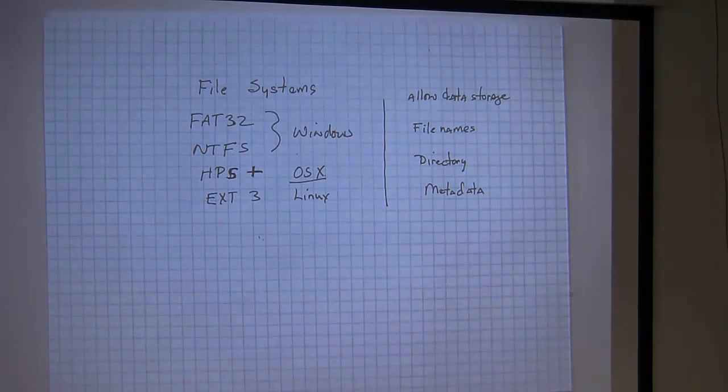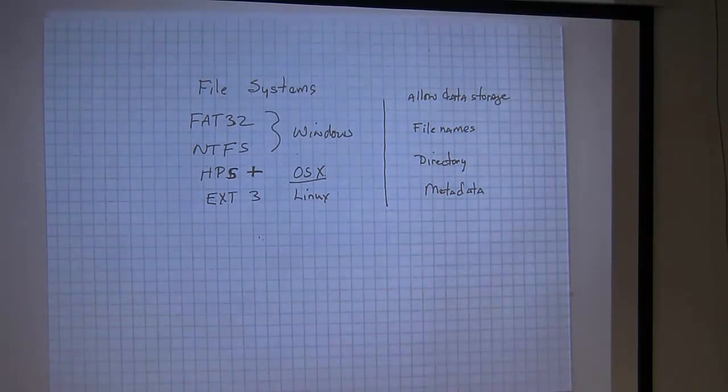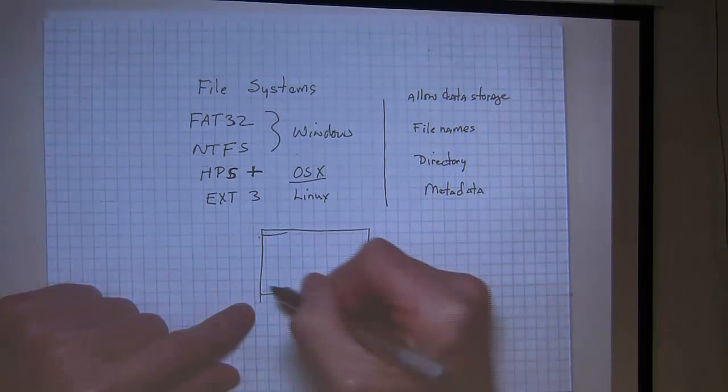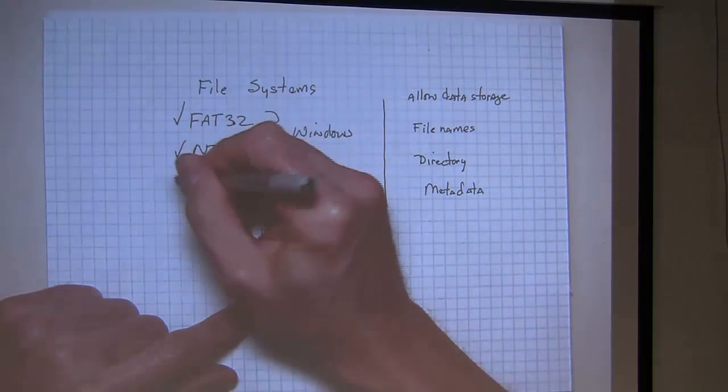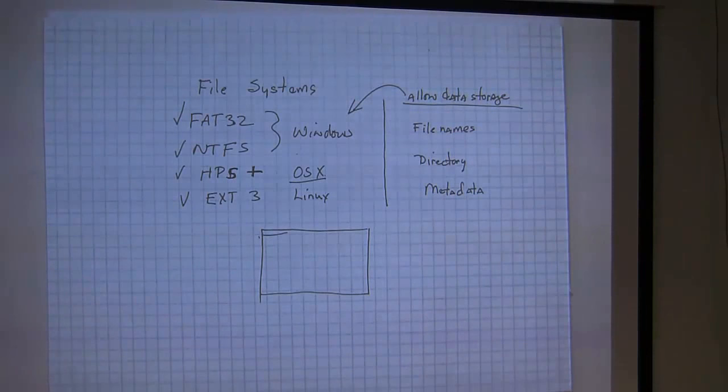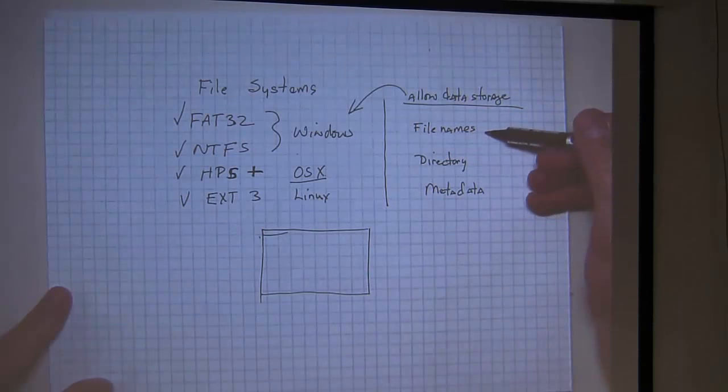So file systems, once we create these partitions, once we create these disk spaces, once I create my partition, then I have to choose one of these file systems so that I can lay my data down, store it, retrieve it, and all of that. So that's what file systems are about. Allowing the data storage and retrieval. They usually have characteristics on how they deal with file names, directories, and metadata.